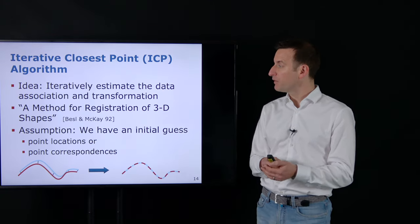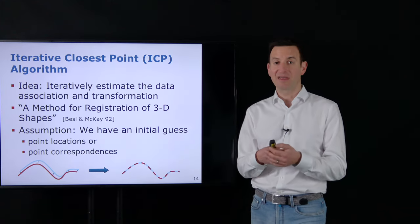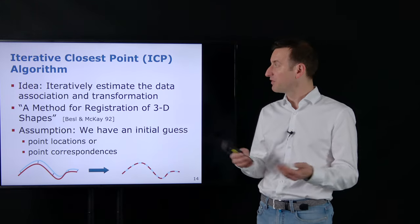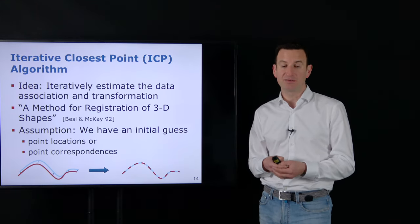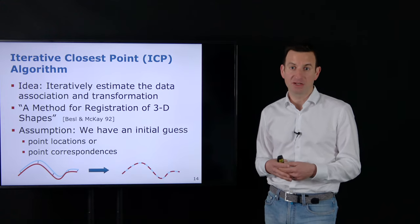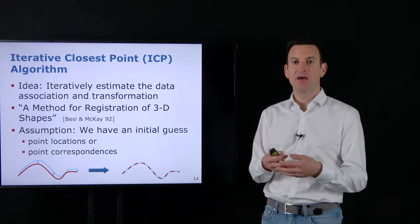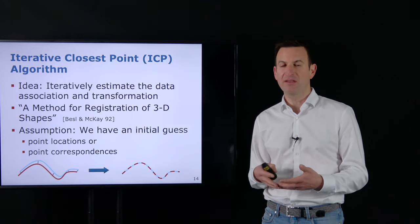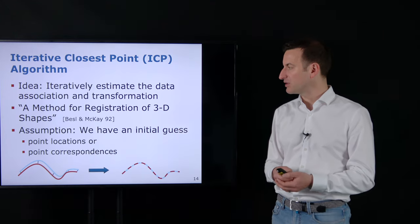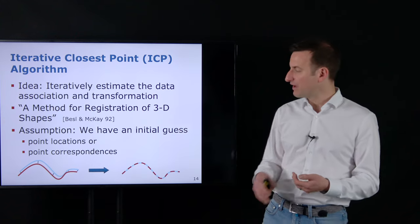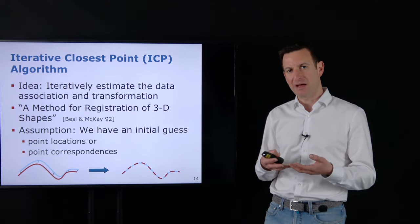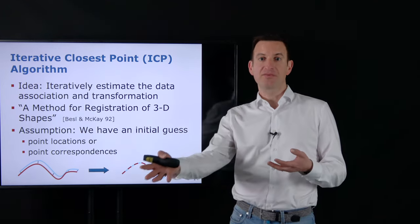ICP is an effective approach, but it is iterative rather than direct, and the initial guess matters. The underlying assumption is that we have some form of initial guess about how the point clouds are aligned. It doesn't have to be perfect, but if we are very far off, the probability of not converging is high. We can obtain an initial guess from platform odometry — for example, wheel encoders estimating where a scan was taken — or from distinct feature points in the environment.